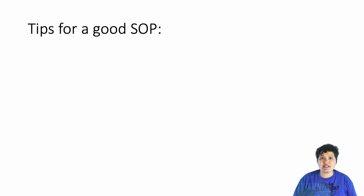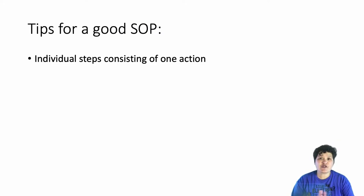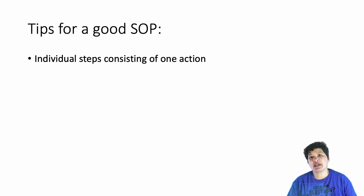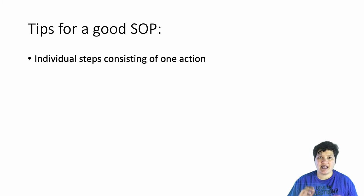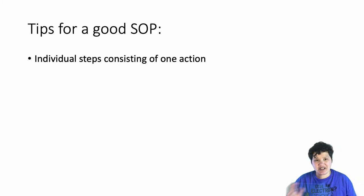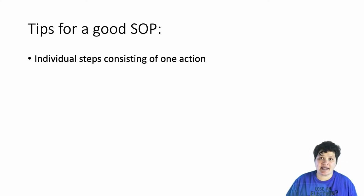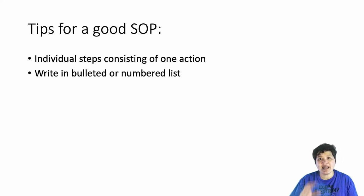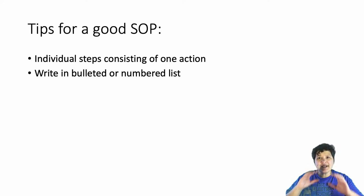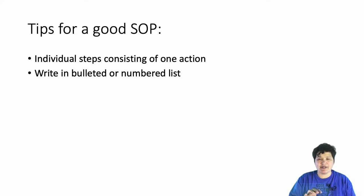Let's start with tips for a good standard operating procedure. First, you're going to write these as a series of steps, and each of those steps can only involve one action. How you define one action may involve a bit of judgment, but we'll talk through examples. Second, you're going to do this as a bulleted or numbered list, because it allows people using your SOP to quickly identify exactly where they are — which is hard to do when the step is buried in the middle of a paragraph.